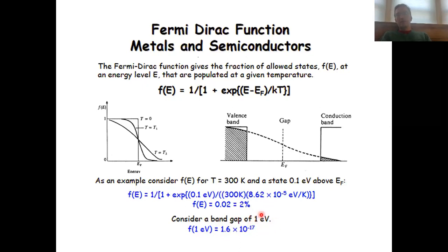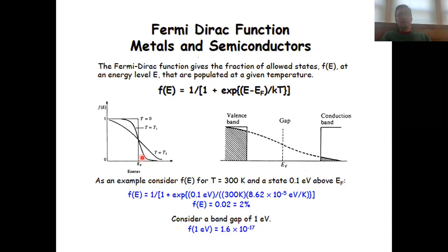That would be approximately the band gap for silicon, and that explains why pure silicon has such a low electronic conductivity — the number of charge carriers that make it into the conduction band at a temperature of 300 K is just extremely small. Whereas the number of carriers that make it into the excited state in a metal is significantly larger, because any crystal orbital above the Fermi level will allow for electronic conductivity.